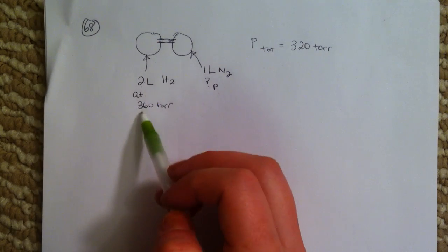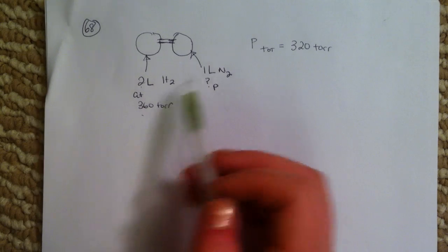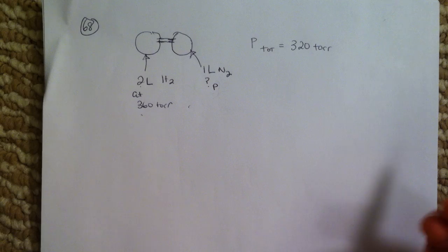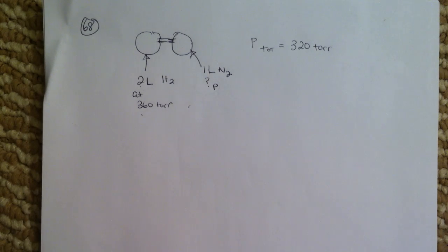We have 2 liters in this bulb at 360 torr, and 1 liter, and we don't know what its pressure is here. We don't know how many particles it is, so we don't know its pressure.